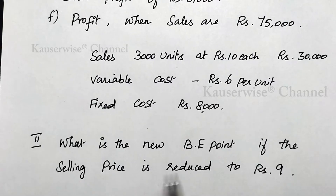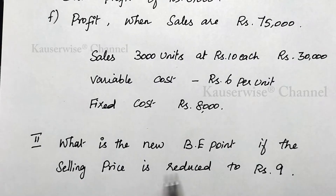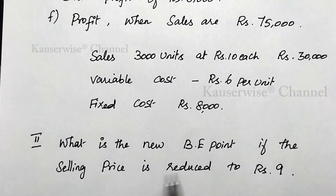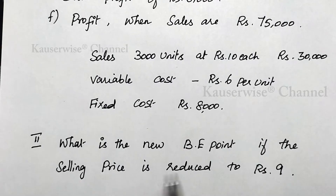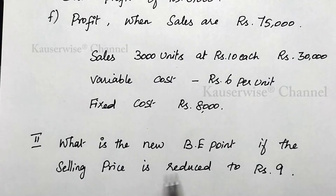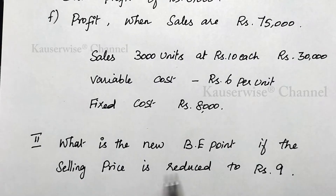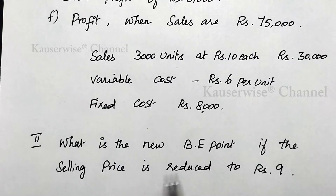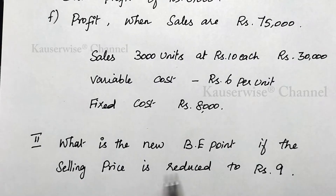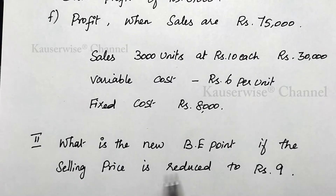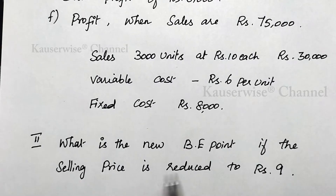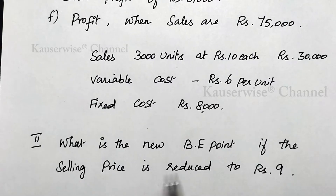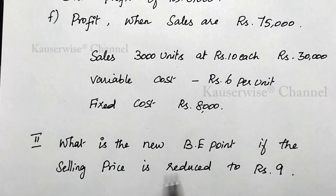Now we calculate profit. We have already calculated profit in the marginal costing statement. The profit is Rs. 4,000. So the third component, calculation of profit, gives Rs. 4,000.